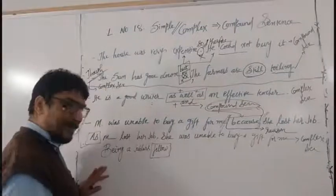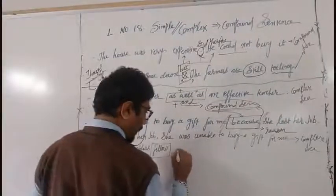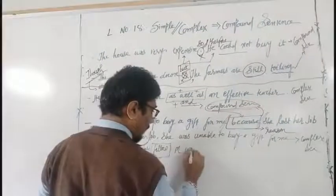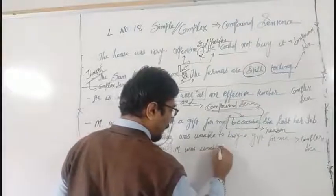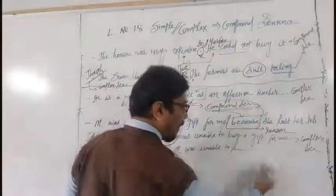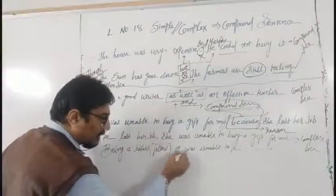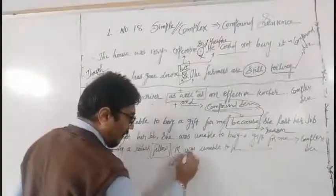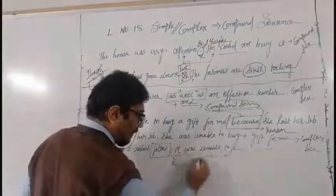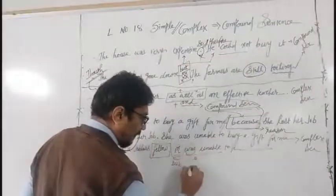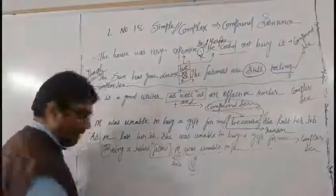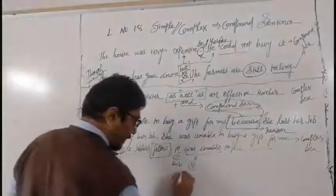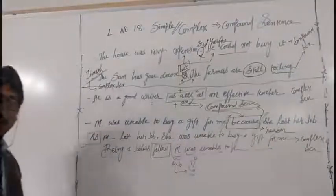'Being a jobless fellow, Mira was unable to buy a gift for me.' What is Mira? Subject. 'Was unable' — this is the verb. Only one subject, only one verb is used over here.